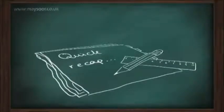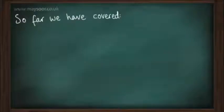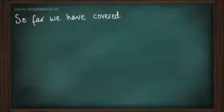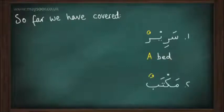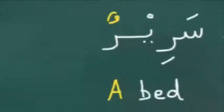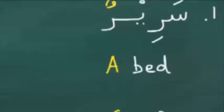Quick recap. If we wanted to express an ism — a noun — that is nakira, indefinite, we simply place a tanwin at the end of the word. For example, sarirun means 'a bed'. Similarly, maktabun means 'a desk'. We mentioned that the 'un' sound at the end of the word coincides with the indefinite article 'a' or 'an' in English.